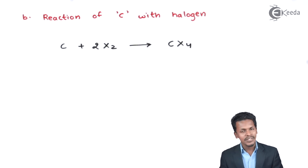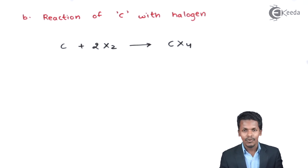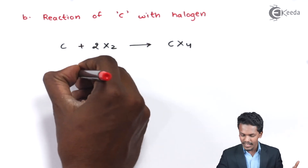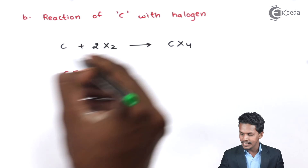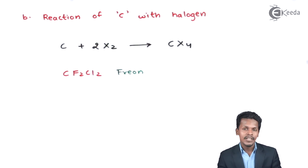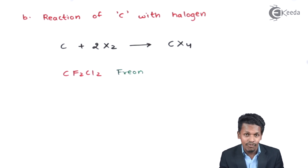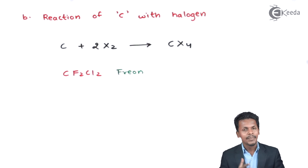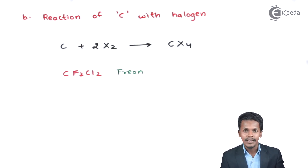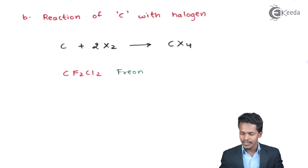During the halogenation process, carbon can also be converted into freons. If carbon is associated with both F2 and Cl2, these are interhalogen compounds associated with the carbon atom, known as freons. Freons were widely used as refrigerants to give a cooling effect. CFCs — chlorofluorocarbons — are basically a type of freon used in refrigerants.